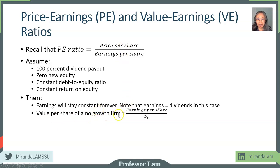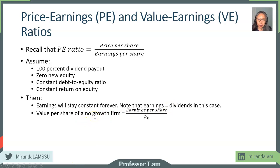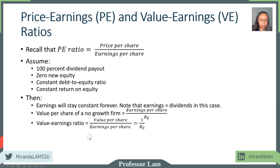So this is a no-growth firm. You're paying everything out, and the value of a no-growth firm is a perpetuity. So the value is earnings per share divided by the required return — this is the perpetuity formula. If you use dividends instead, it's the same because we're paying out all our earnings. The value earnings ratio is value per share divided by earnings per share, which is simply one over the cost of equity.